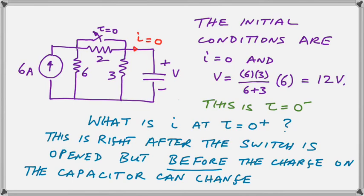Now T equals 0 plus is the condition that pertains right after the switch is opened. But before the capacitor has had a chance to change its charge. When we open the switch we know that the capacitor voltage will drop. Why do we know this? Because we have introduced a resistance between the 6 amp source and the actual capacitor. Or if you look at it we have created by opening the switch a voltage divider that consists of the 2 and 3 ohm resistor.